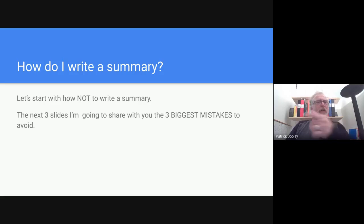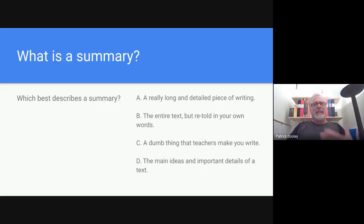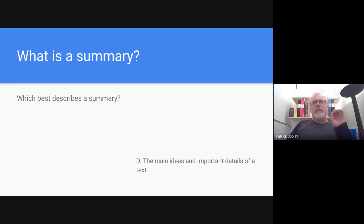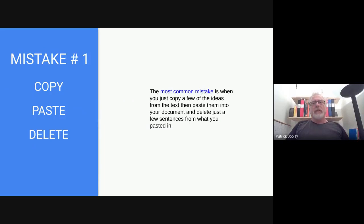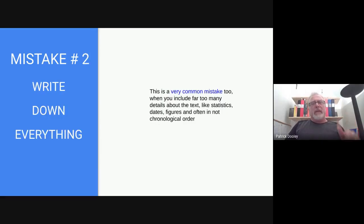How do I write a summary? I'm going to share with you the three biggest mistakes. But first, what is a summary? It's the main ideas and important details of a text or whatever you're summarizing. The biggest mistake, number one: most people just copy a few of the ideas, paste them in, and delete a few sentences. Terrible idea. Another big mistake: you write too much — you rewrite the whole story, giving statistics and figures. No good.